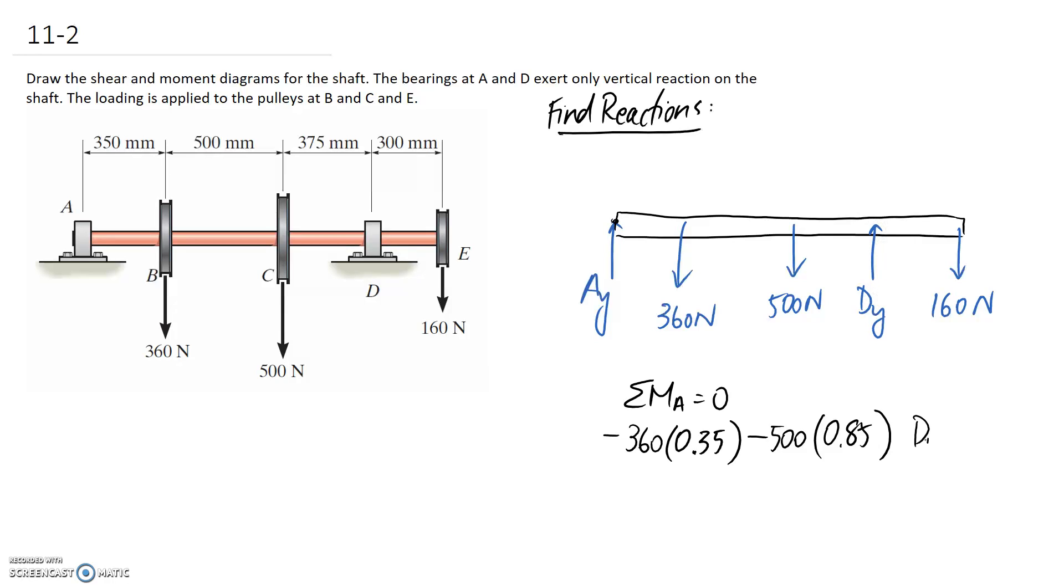We've then got Dy which is going to be acting at this full distance, 350 plus 500 plus 375, which is equivalent to 1.225 meters. This one is going to try and create an anti-clockwise moment so it's positive. Finally we have this 160 Newton force at the full length of the beam, 1.525 meters, and it's going to try and go clockwise so it's negative.